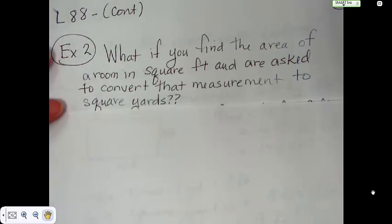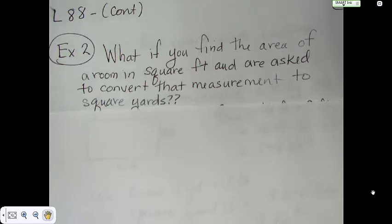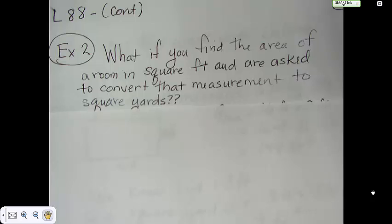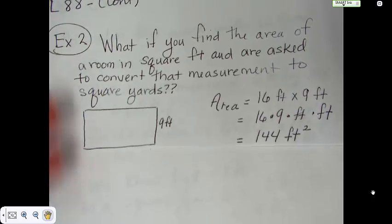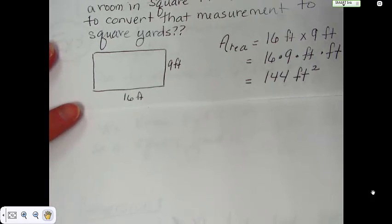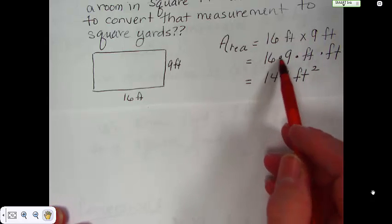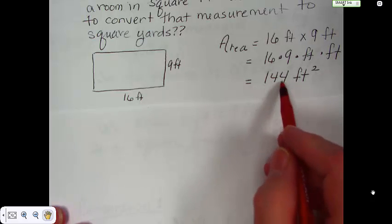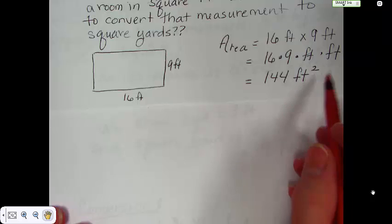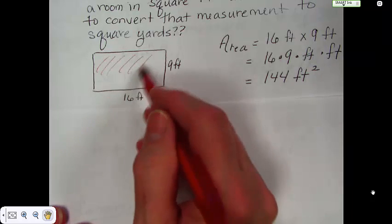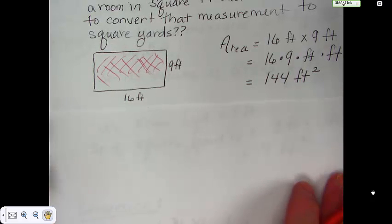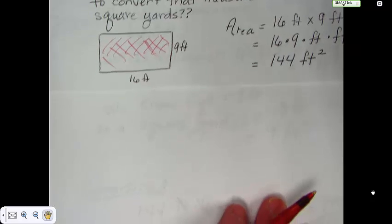What if you were to find the area of a room in square feet? Pretty easy, but then they say they want to put carpet down, and carpet is sold in square yards. So you're going to have to convert from square feet into square yards. Here's the room: it is a 9 by 16 room, so we have 16 feet by 9 feet, and we end up with 144 square feet. The carpet is sold in square yards, so we have to do a conversion.